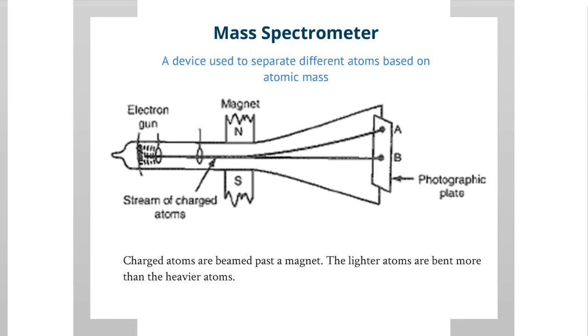So here we have a mass spectrometer, which is a device used to separate different atoms based on atomic mass. Mass spectrometers can help us detect different isotopes of an element, and they do so by beaming charged atoms past a magnet. Because they're charged, the magnet has the potential to bend their trajectory by attracting or repelling them.